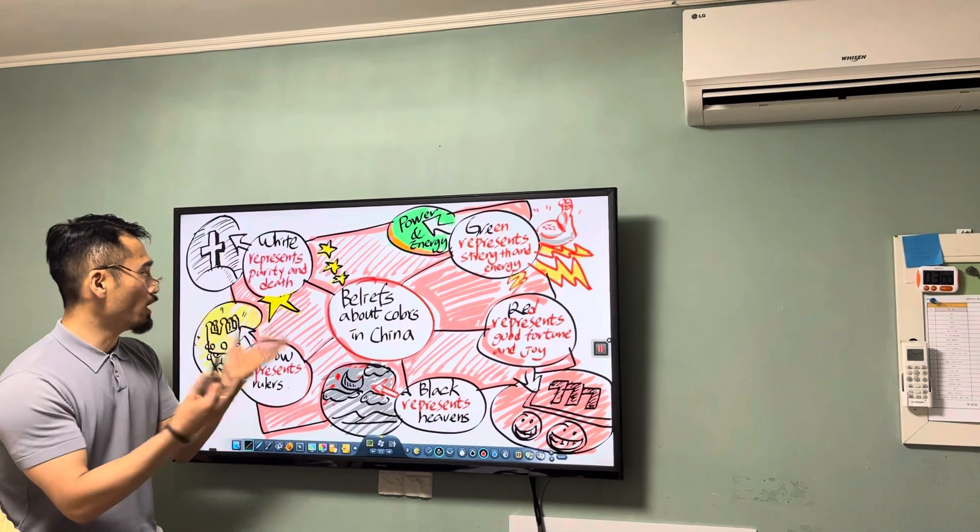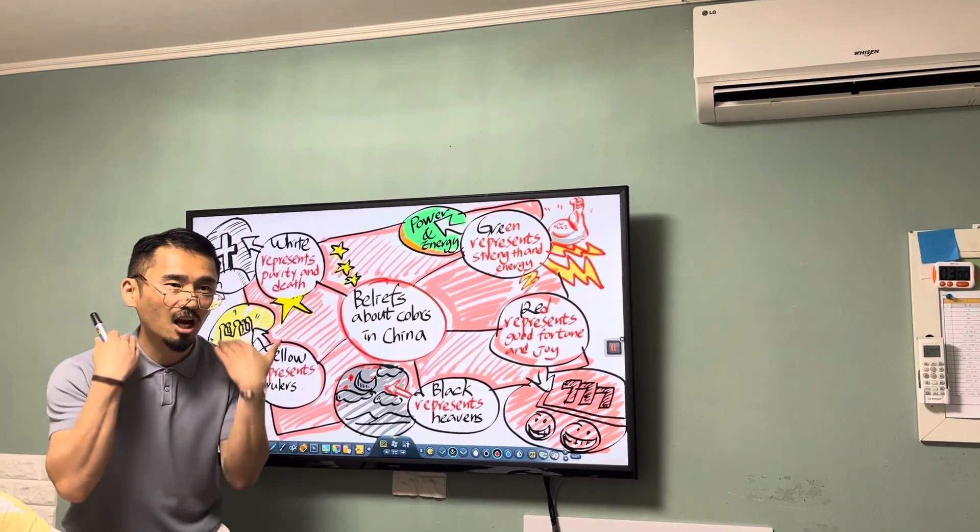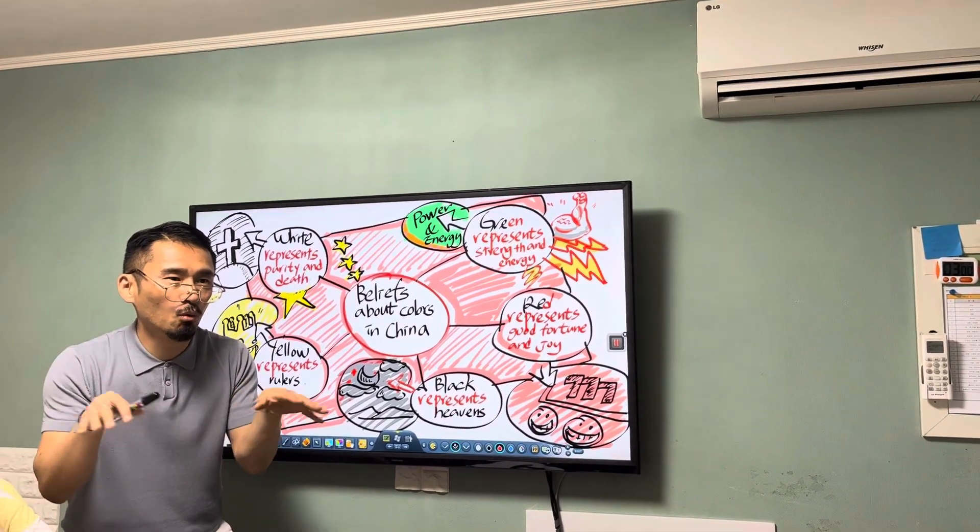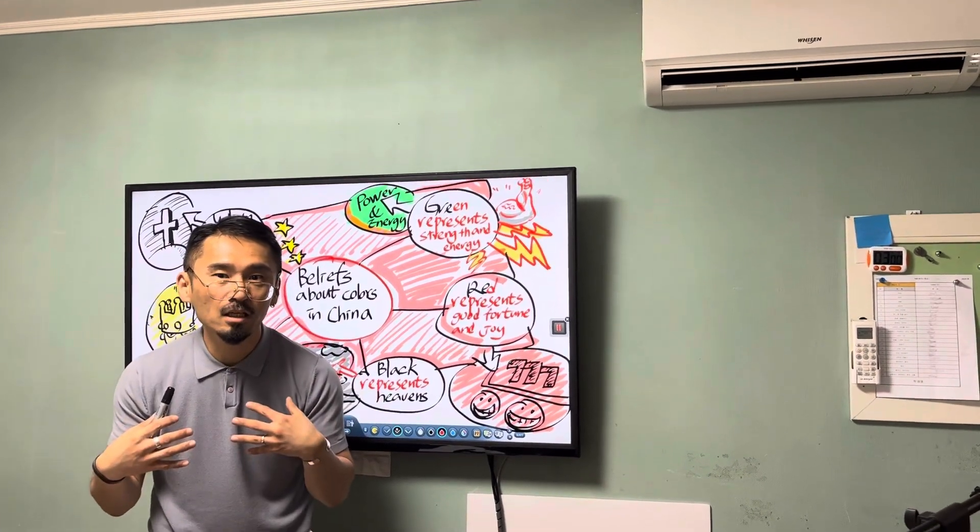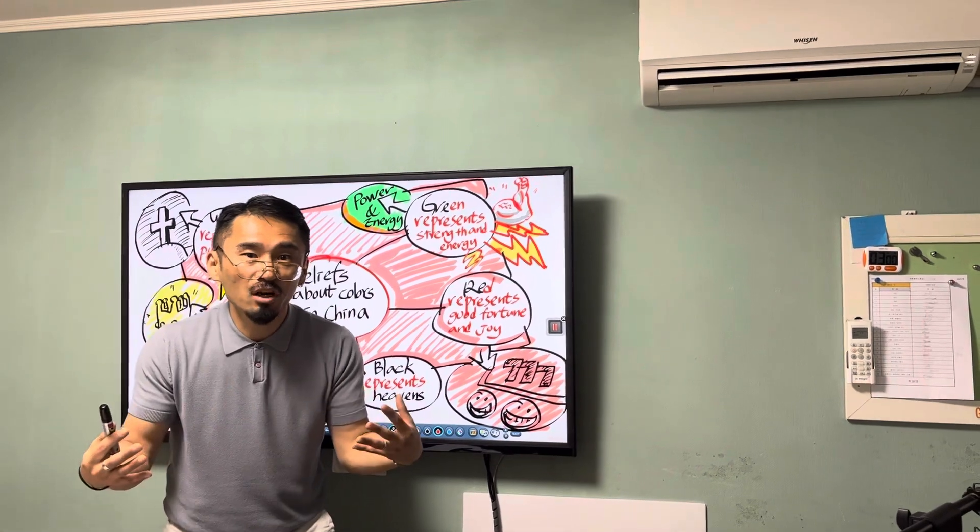Lastly, white. White represents death. So people in China wear white when their loved ones die.